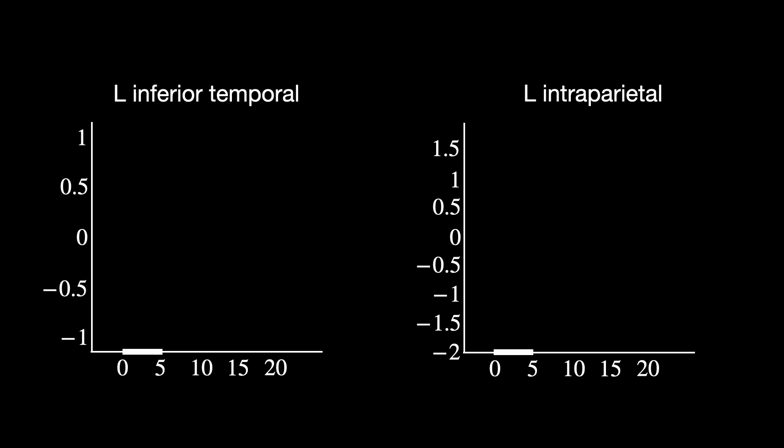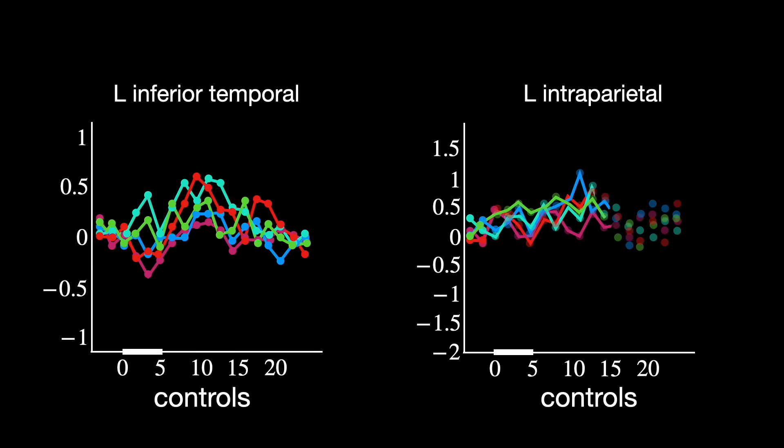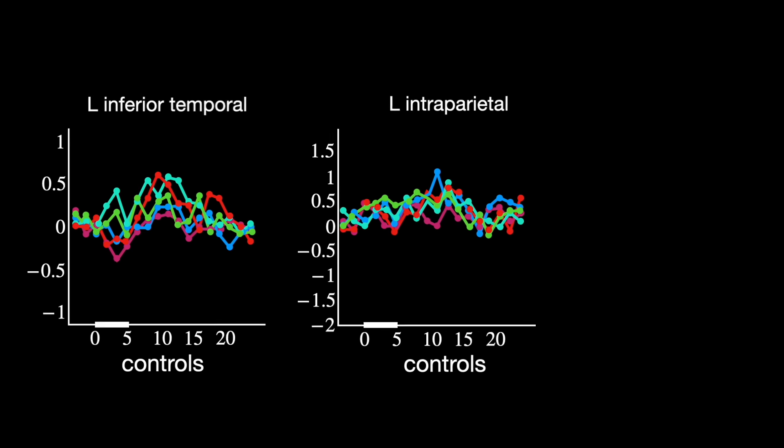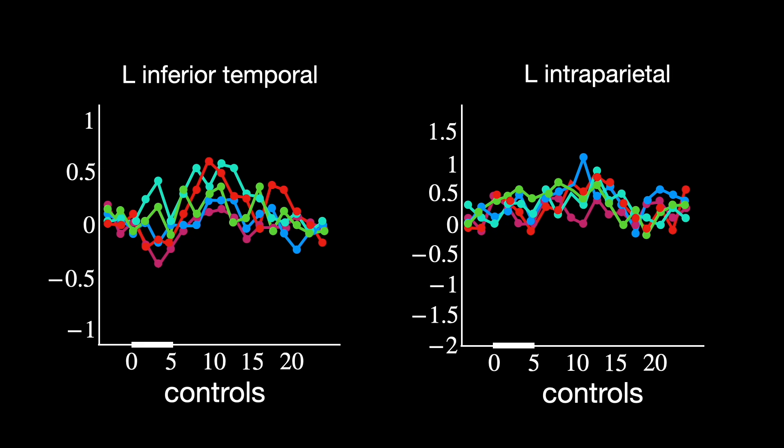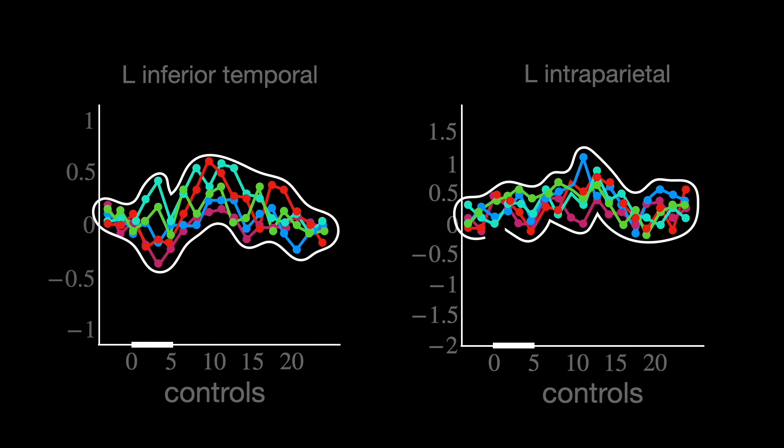The lines on the graph itself represent activation in these areas when the control group was thinking about meaningful sentences in each topic. The topics being analysis, algebra, topology, geometry, and non-math. As you can see, the responses to all topics, math and non-math, were mild and similar, showing that these regions weren't strongly specialized for mathematics in their brains.